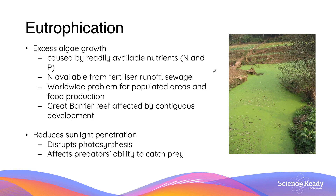Eutrophication is an event in which there is an excess of algal growth as a result of an excess of available nitrogen or phosphorus nutrients. These may come from a large variety of sources such as fertilizer runoff or sewage, and this issue has been apparent in largely populated areas, even affecting the Great Barrier Reef. The algal growth remains on the top of the water — as seen in the image on the right — reducing sunlight penetration to prevent photosynthesis in other underwater plants and hindering predators' ability to seek and catch prey.